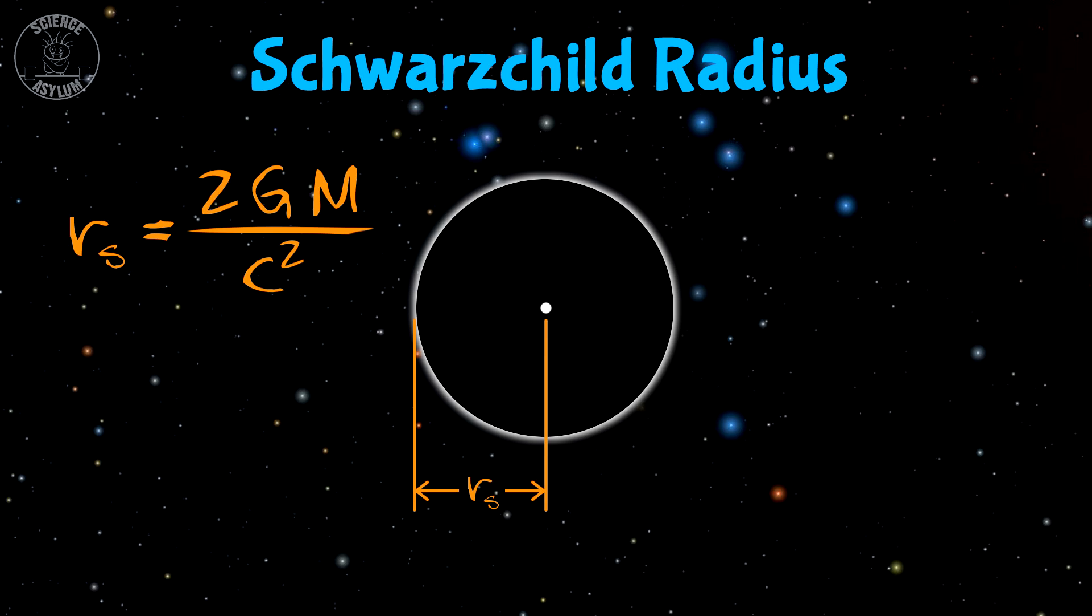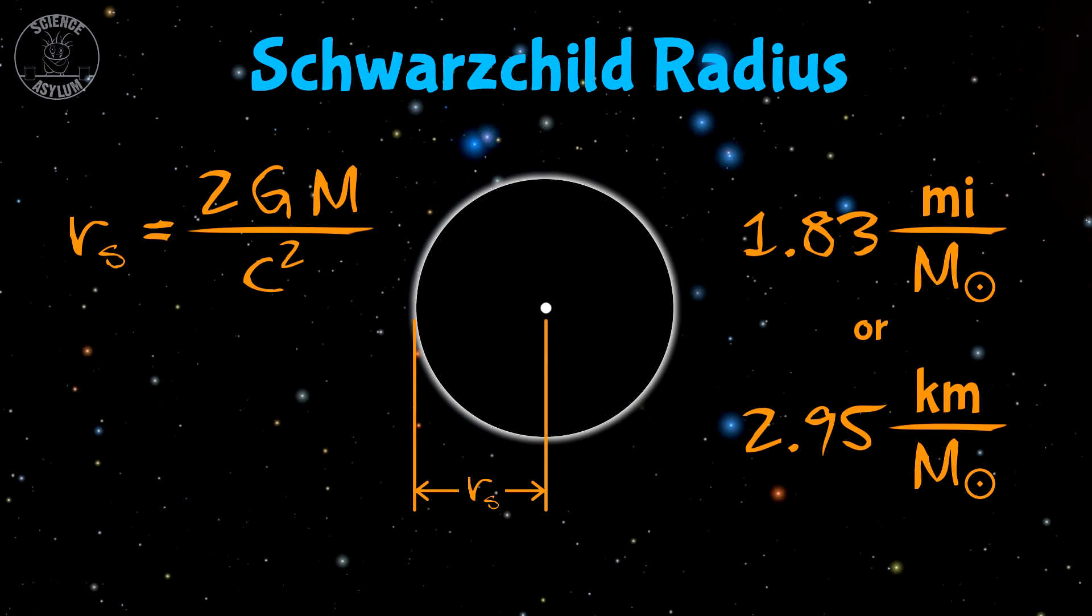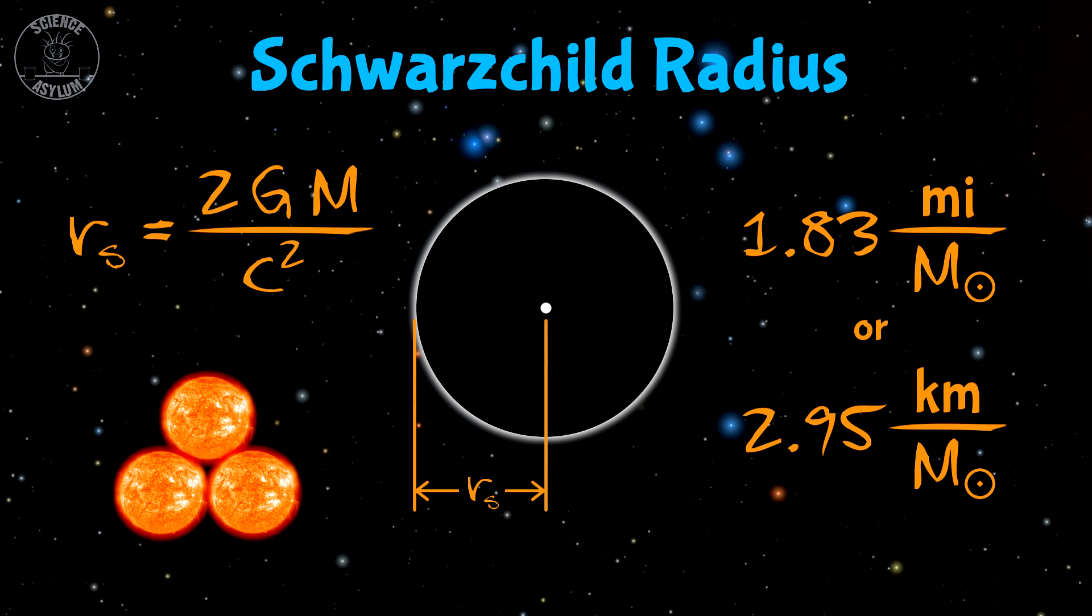How big that event horizon is depends on how massive the black hole is. Its size is given by the Schwarzschild radius, which looks something like this. Or more simply, 1.83 miles per solar mass. For the three solar mass black hole mentioned earlier, that's a little over 5.5 miles, or 11 miles across.